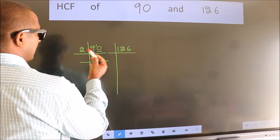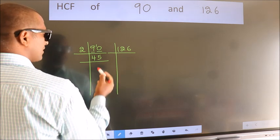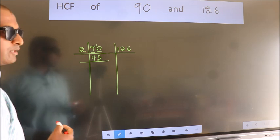1 carried forward 10. When do we get 10 in 2 table? 2 fives 10. Now, last digit 5, not even, so this number is not divisible by 2.